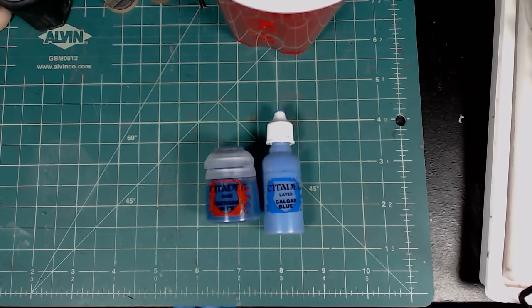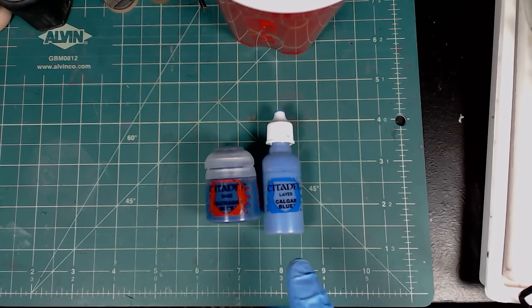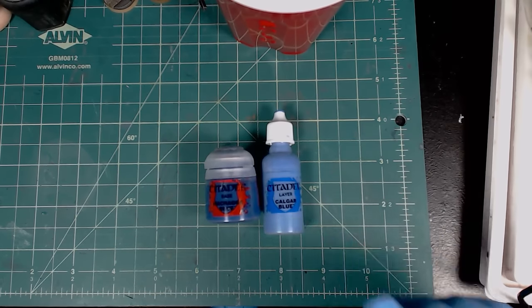Hi there everyone. I wanted to go through a quick procedure that I've developed for transferring paints from the Citadel paint pots into these dropper bottles. Many people in the community are probably already familiar with this, as the concept of putting these paints into dropper bottles has a lot of advantages.